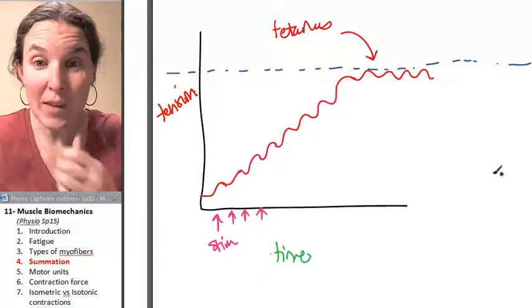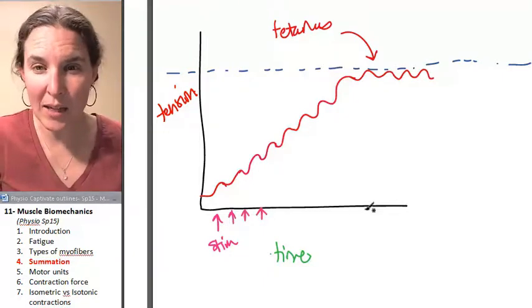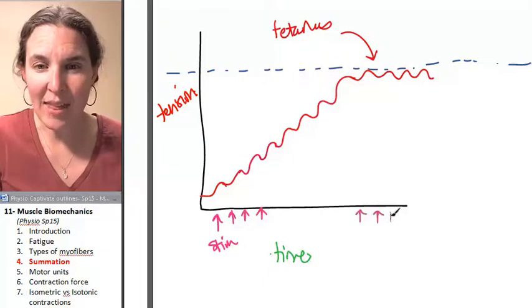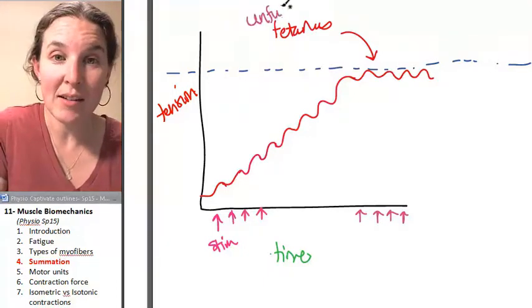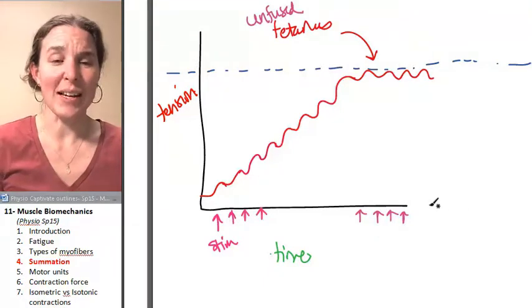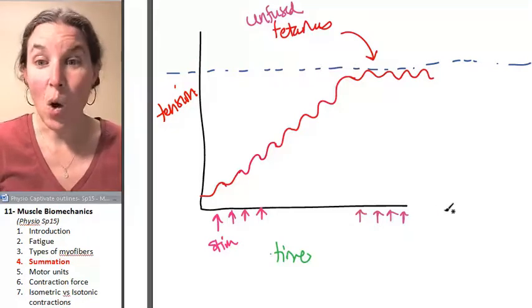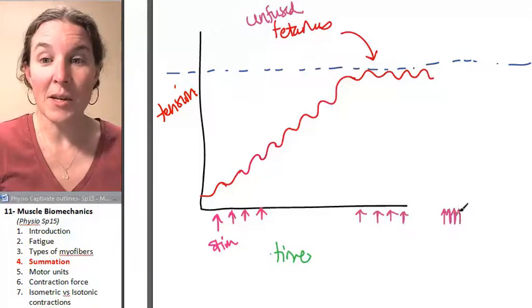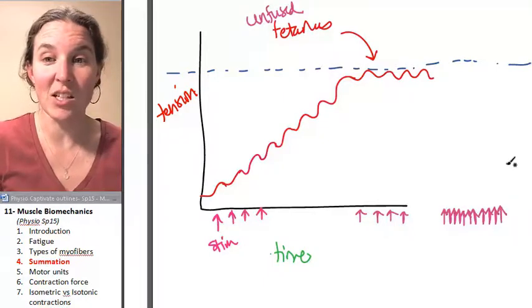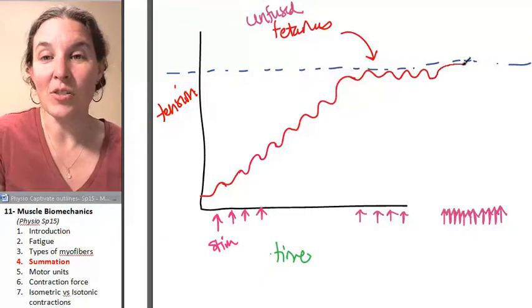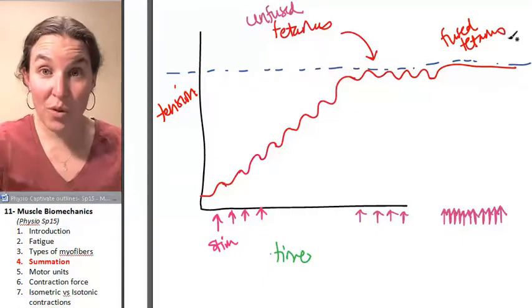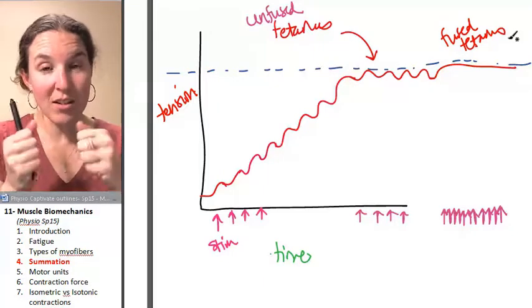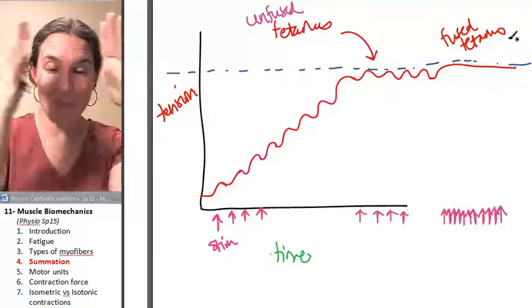Now in this situation, my firings are happening, my stimuli are happening at a pace that causes, we're still getting some bumpiness. And that's called unfused tetanus. But if all of a sudden your body is like, we are going to start doing, we're not messing around, we're sending messages that you guys better get your doo-doo together and contract faster, faster. Guess what happens? You get a phenomenon called fused tetanus, and it's a smooth series of contractions that maintain maximal tension.